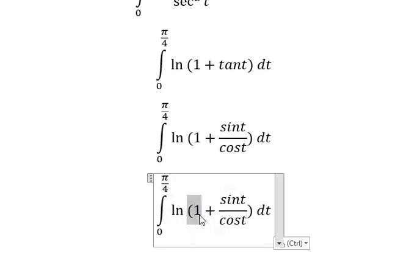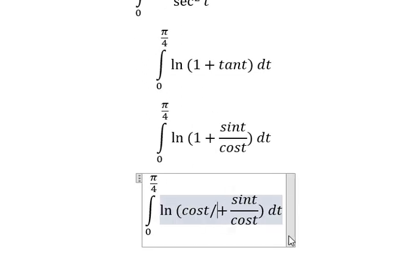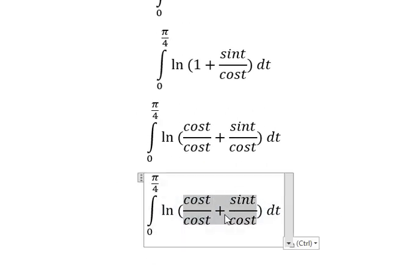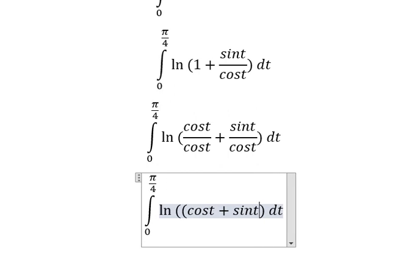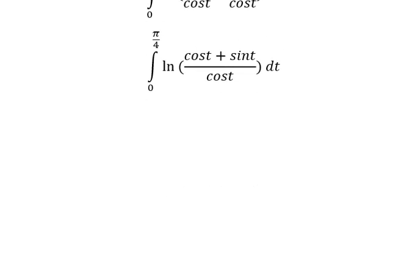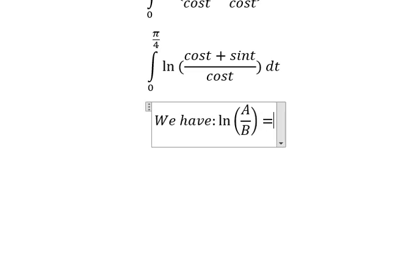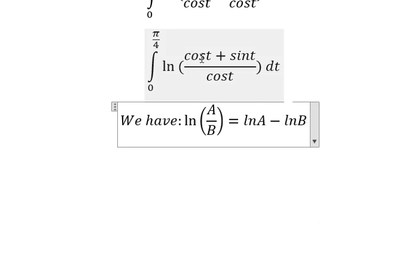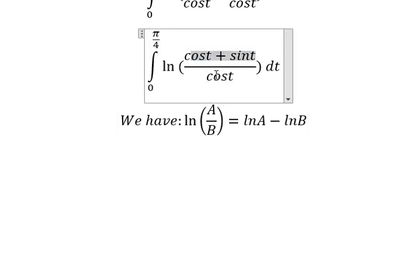We can use a common denominator, so we put it like this. We apply the formula: ln(a/b) equals ln(a) minus ln(b), where capital A is this expression and capital B is this one. Now we have it written out.